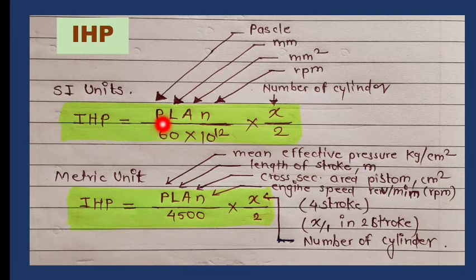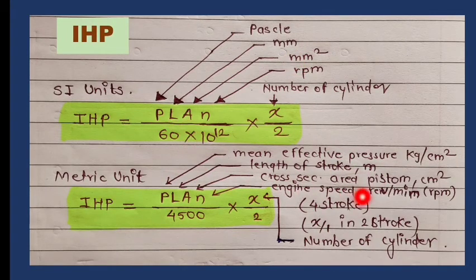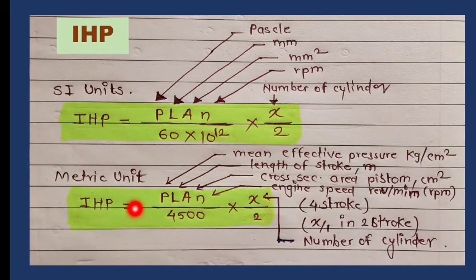There is a formula to compute IHP. In metric unit: IHP = P × L × A × N divided by 60, where P is mean effective pressure in kg per cm², L is stroke length in mm or meters, A is cross-sectional area of the piston in mm² or cm², N is engine speed, and for a 4-stroke engine we divide by 2. We mostly use the IHP formula in metric unit.